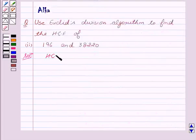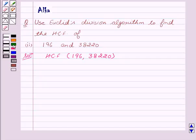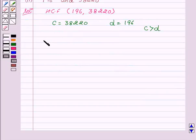We have to find the HCF of 196 and 38,220. So here we see that C equals 38,220 and D equals 196. As we know that C should always be more than D. Now we will apply Euclid's division algorithm.